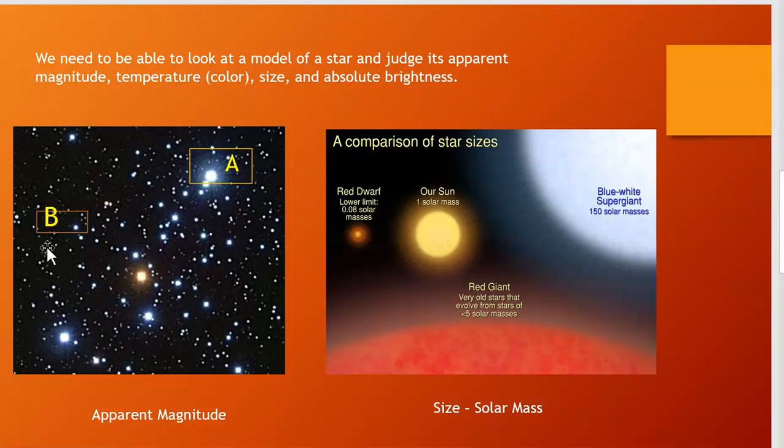In reality, that star may just be closer to us, so therefore it may look brighter. But that is the apparent magnitude. It's how it looked. It doesn't matter if you were standing on it and you measured its brightness, how bright it really is. That's not what we're talking about. We're talking about how it looks from Earth. Apparent magnitude.